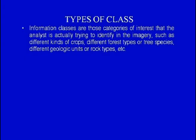Before we proceed to classification, let us look at the different types of information classes. These can be categorized into two classes: information classes and spectral classes. Information classes are those categories of interest that the analyst is actually trying to identify in the image, such as different types of crops, different forest types or tree species, different geological units or rock types, and so on.